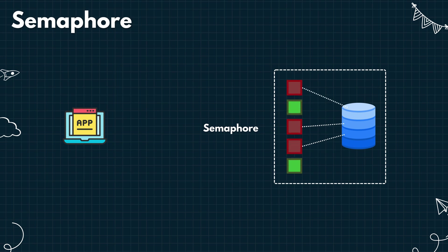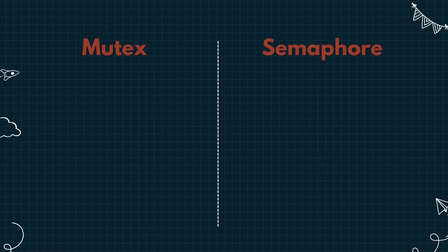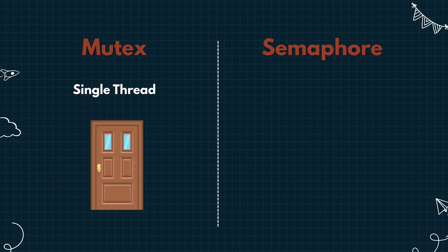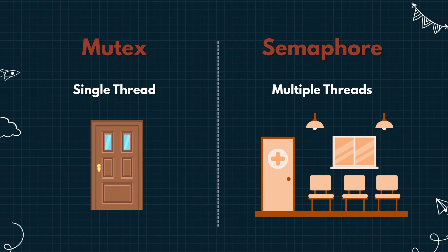To wrap up, let's quickly look at the key differences between a mutex and a semaphore. A mutex is a mutual exclusion lock — it allows only one thread to access a critical section at a time. Think of it like a locked door that only one person can pass through. A semaphore, on the other hand, allows multiple threads to access the same resource simultaneously. It's like a waiting room with N number of seats — if all are occupied, new arrivals have to wait.